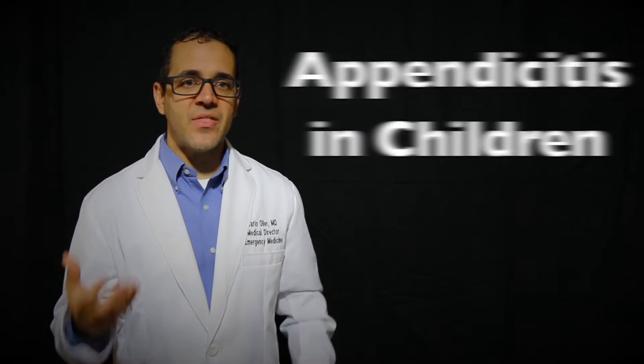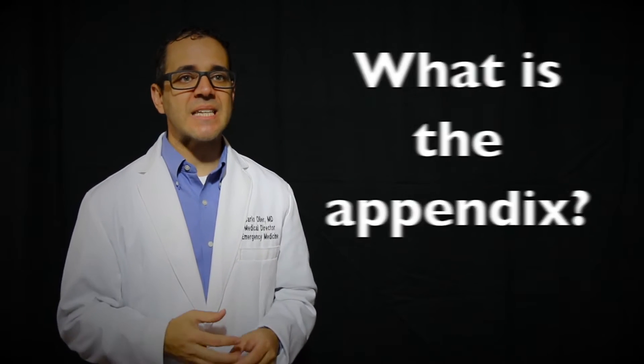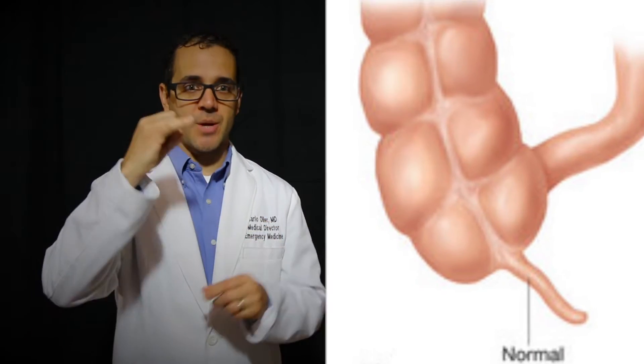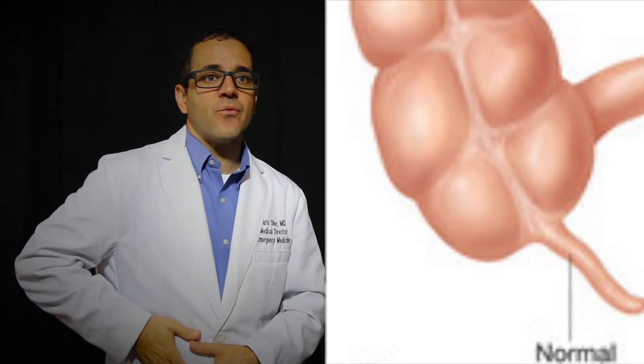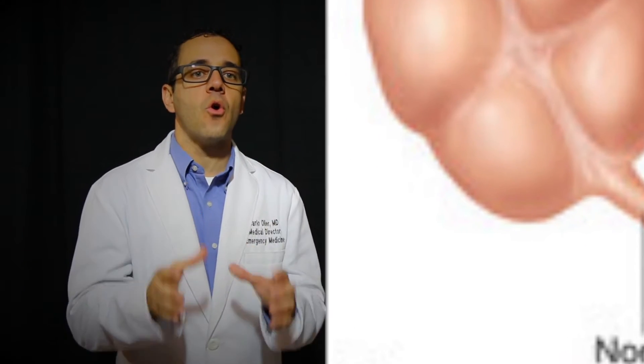But first of all, what is the appendix? The appendix is a long thin pouch shaped like a finger. It hangs down from the large intestine, also called the colon, and is located around the right lower part of your belly.